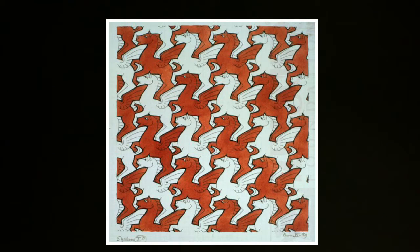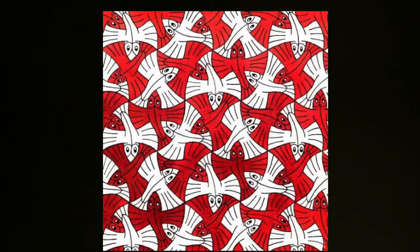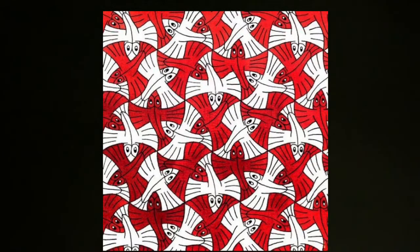So tessellation is when you repeat but there is no overlapping. That means no images go on top of one another and there's no spaces between those objects. Looks really complicated, but I'm going to show you an easy way that we can make our own tessellations.